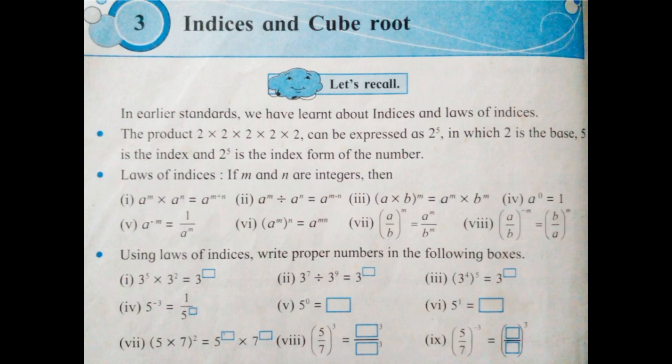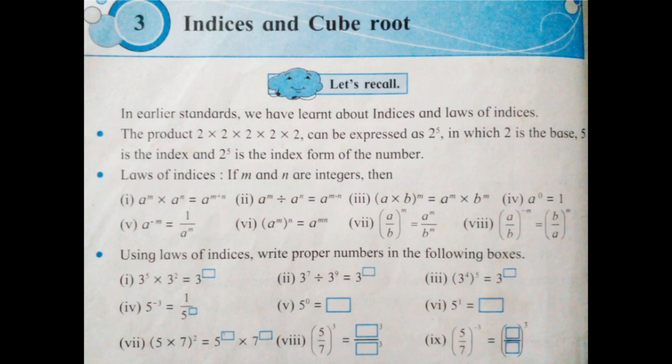First one: 3 raised to 5 into 3 raised to 2. The formula is A raised to M into A raised to N is equal to A raised to M plus N. If the base is same, you have to add only the index because the indexes are different. So 3 raised to 5 plus 2, the answer is 3 raised to 7.